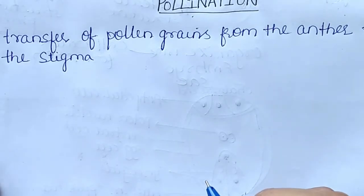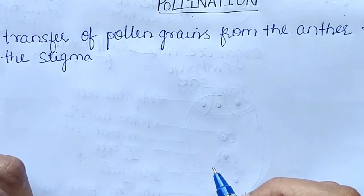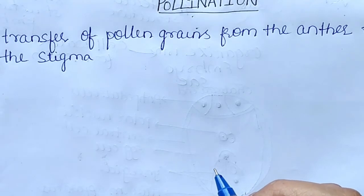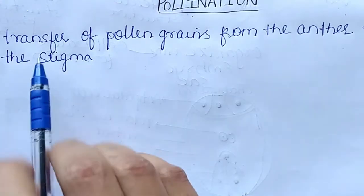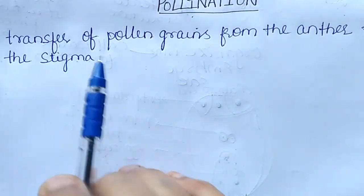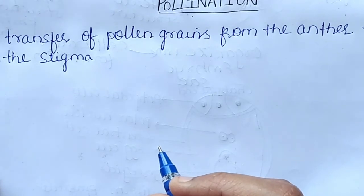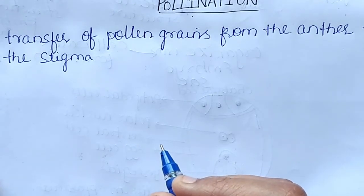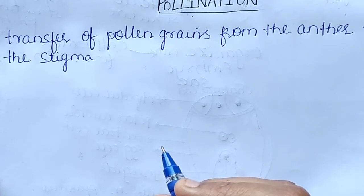Welcome back dear students. In the last video we discussed about the formation of embryo sac, which is formed by a functional megaspore. Today in this video we are going to study about pollination, which is nothing but transfer of pollen grains from the anther to the stigma. Pollination is required to develop new plants as well as new seeds.